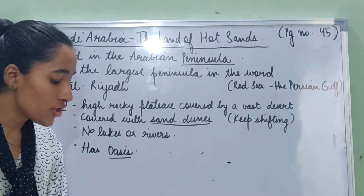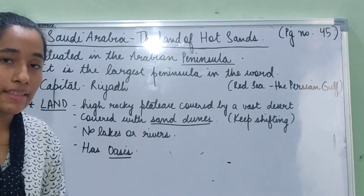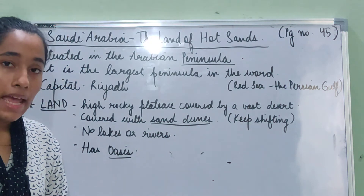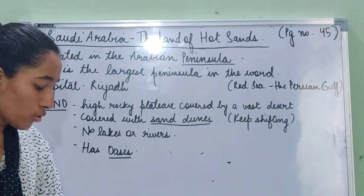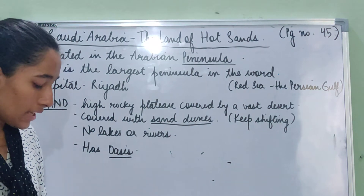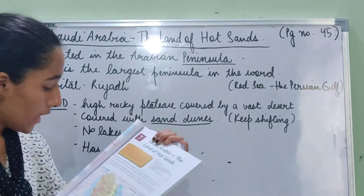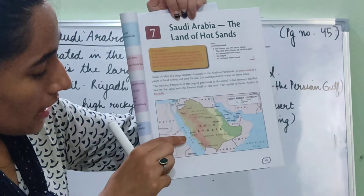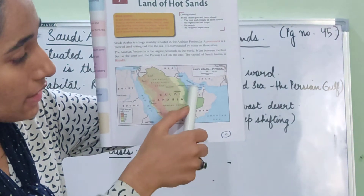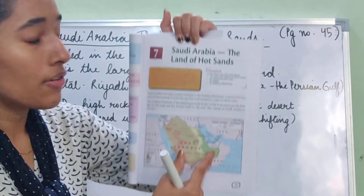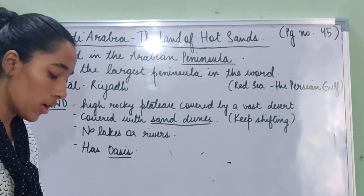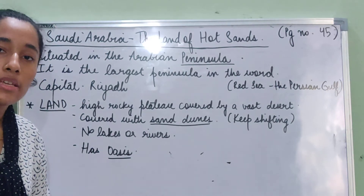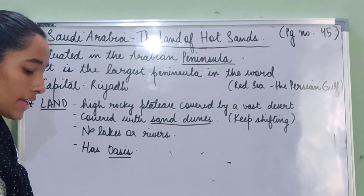The Arabian Peninsula is the largest peninsula in the world. Underline this. It lies between the Red Sea on the west and the Persian Gulf on the east. You can see in the map on page number 45 that Saudi Arabia has the Red Sea to its west and the Persian Gulf to its east. The capital of Saudi Arabia is Riyadh.